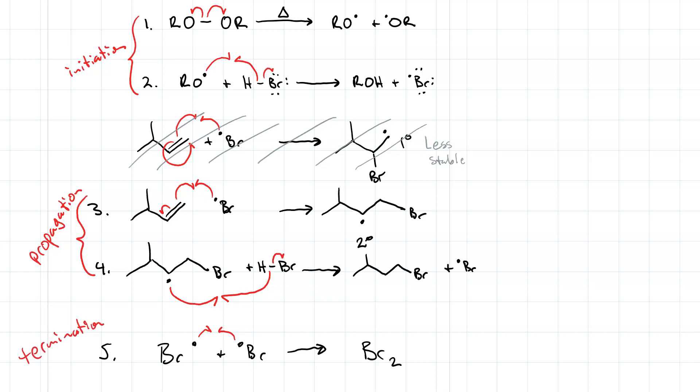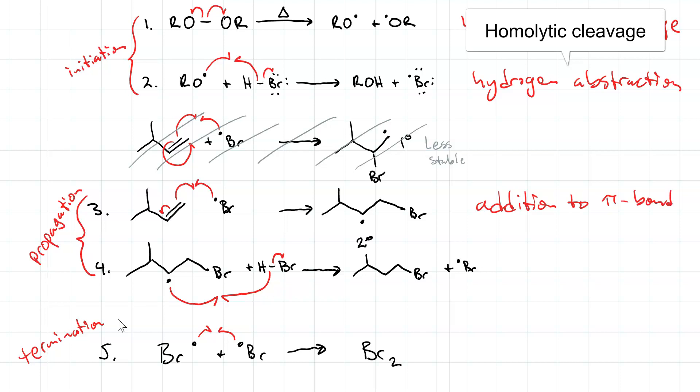Alright, so our initiation steps: Step 1 is homolytic cleavage, not heterolytic cleavage. Step 2 is hydrogen abstraction. Step 3 is radical addition to a pi bond. Step 4 is hydrogen abstraction. And step 5 is coupling, and coupling is always the termination step.